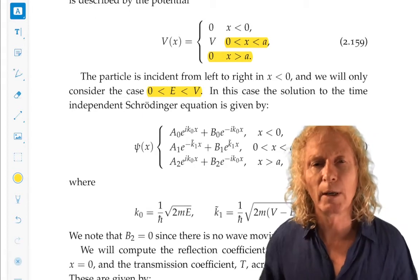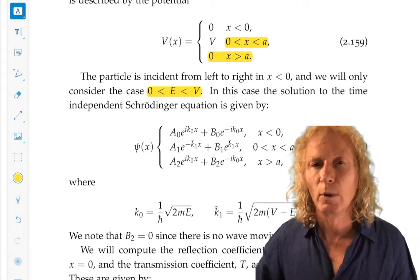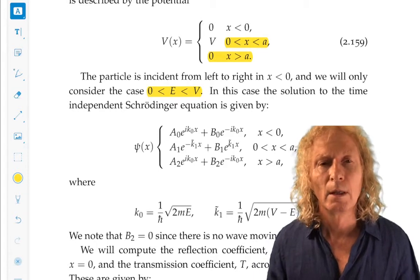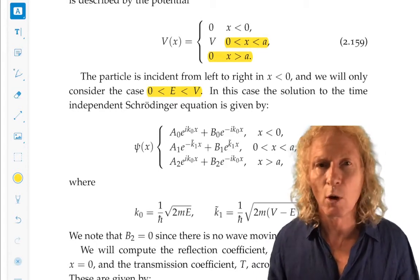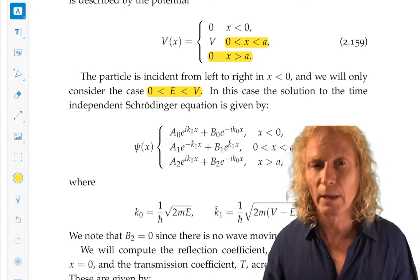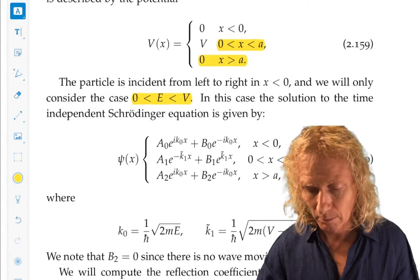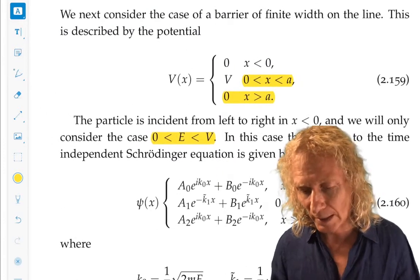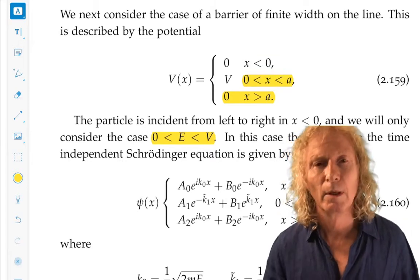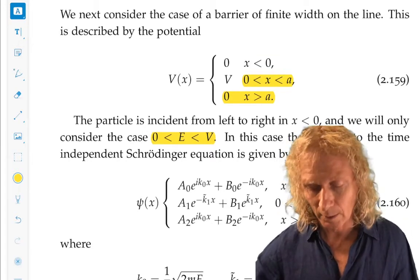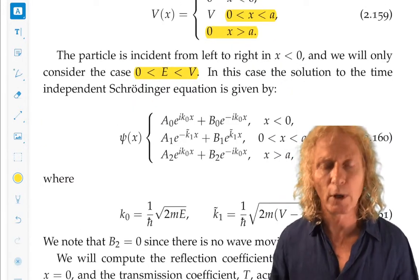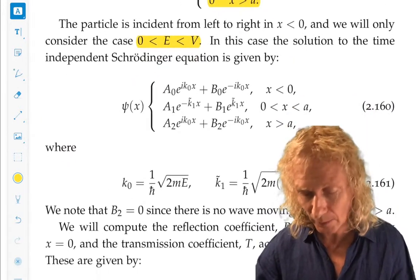We want to see a wave incident on the finite barrier and we want to see what happens to it. Last time when we considered the step, we saw that some probability could leak into the step. It couldn't go all the way through because the step was infinite, but now this is a finite barrier and it's possible for there to be transmission out the other side.